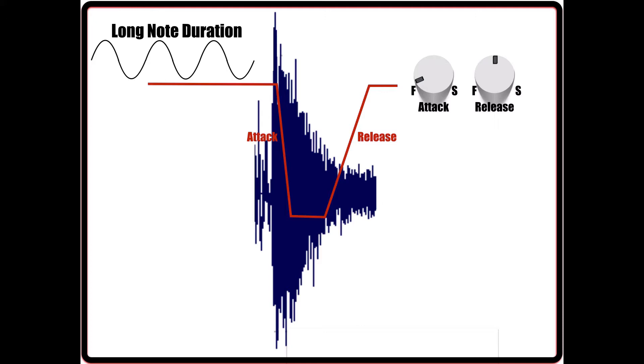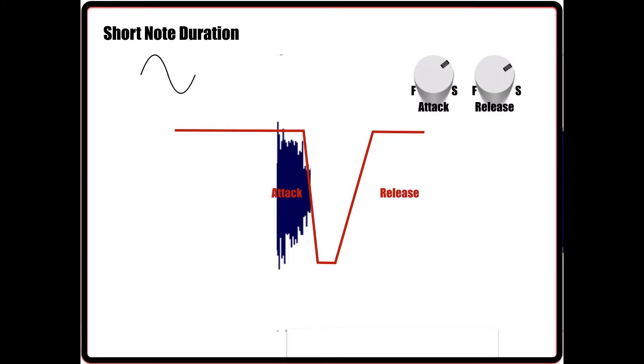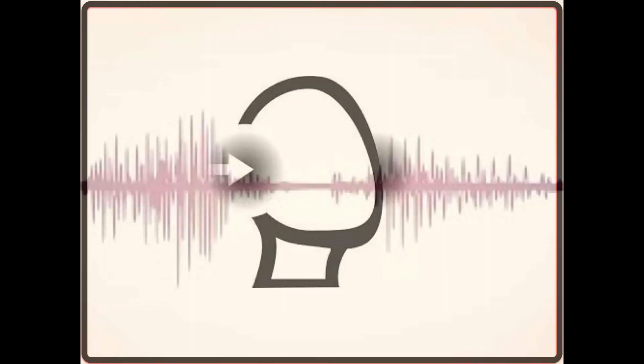However, the opposite of this may not be as viable. Having slow attack and slow release on songs with quick note duration may result in your compressor missing the note entirely and rendering the processor completely ineffective. So that addresses the first rule of thumb when setting attack and release times. I'm going to mention this one more time before I move forward. These are general rules that may or may not apply. Your ears are number one. I simply hope this gives you some direction when trying to find the correct compression setting.